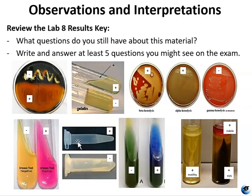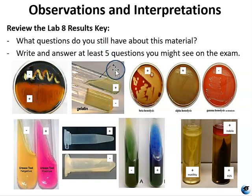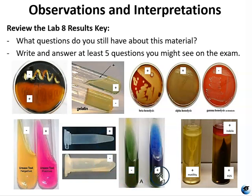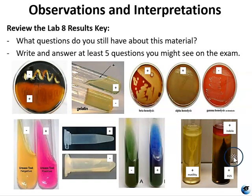For your observations, here is a compiled image of all typical results. Starch hydrolysis: positive and negative. Gelatin hydrolysis: positive and negative. Beta hemolysis, alpha hemolysis, gamma. Urease negative and urease positive. Coagulase positive and negative. Citrate negative and positive. For SIM: one tube is positive for motility, negative for H₂S, negative for indole. Another is positive for H₂S and positive for indole — though you wouldn't be able to tell motility in that tube because the precipitate blocks your view. Those are all the typical results you should see for these experiments.